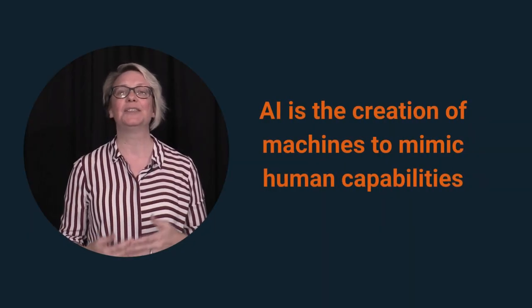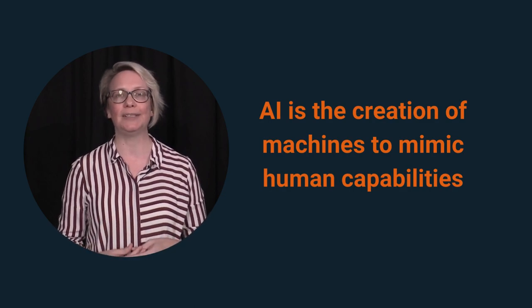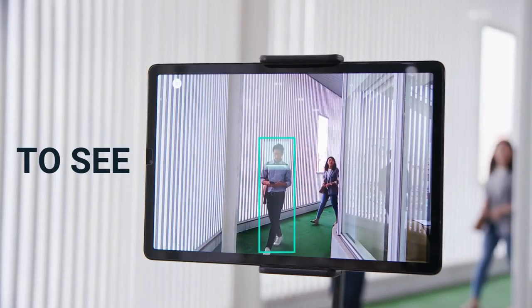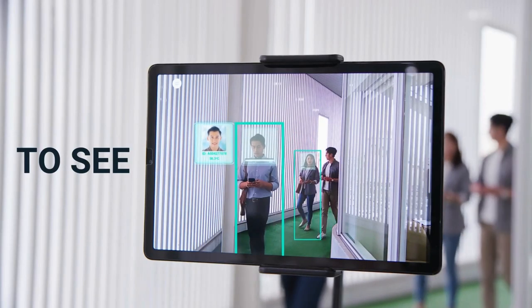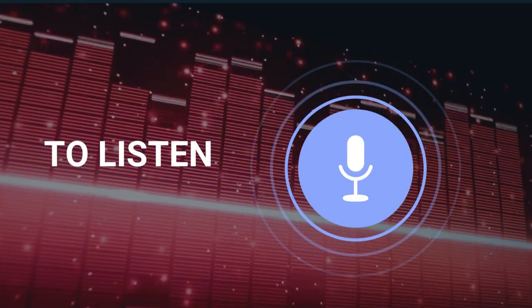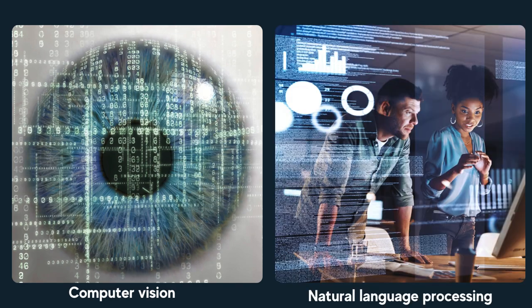Artificial intelligence is the creation of machines to mimic human capabilities, such as teaching a machine to see by recognising objects in an image, and listen, interpreting and analysing sounds. Artificial intelligence is a broad term that covers a range of specialisations and subsets, such as computer vision and natural language processing.